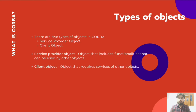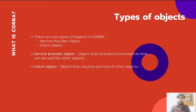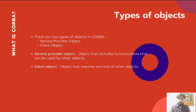Moving on to the types of objects in CORBA — there are two types. First is the service provider object, which is concerned with the server side and includes all the functionalities that can be used by other objects. Second is the client object, which requires services of other objects — namely the service provider objects.